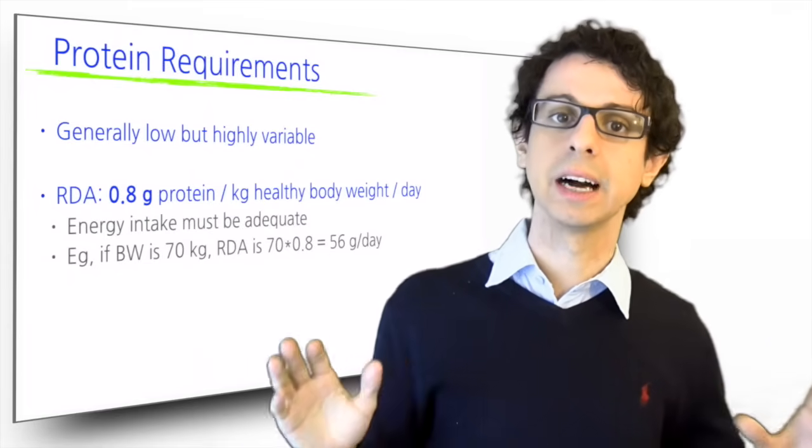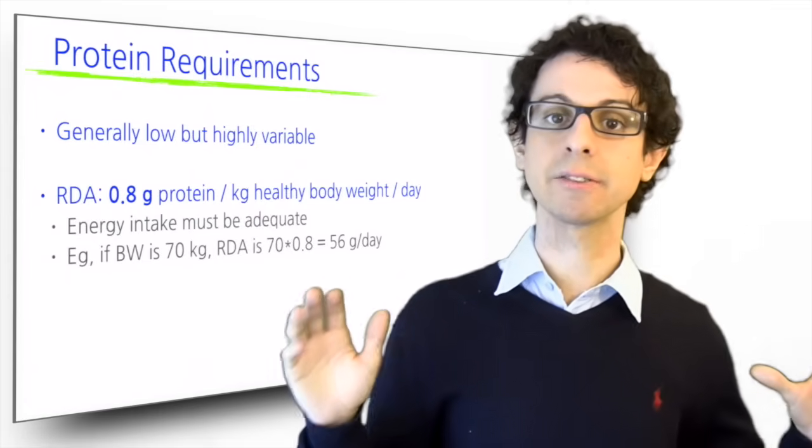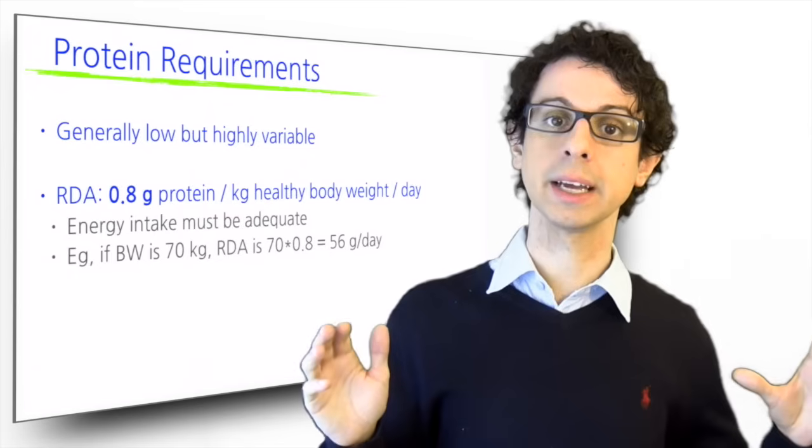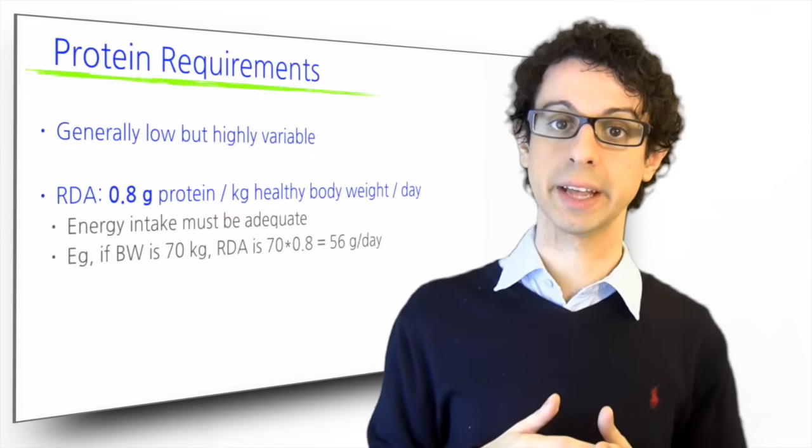So to have an idea, if we do this calculation for an average 70 kilograms adult, we get 70 times 0.8 equals 56 grams of proteins per day.